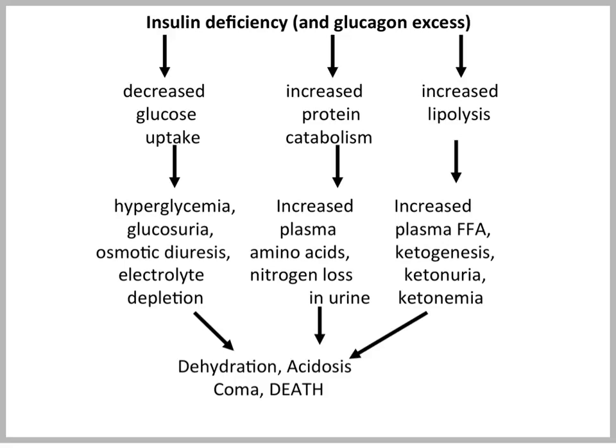Regarding protein catabolism, we have increased plasma amino acids and nitrogen loss in urine. Regarding increased lipolysis, we have increased free fatty acids, increased ketogenesis, ketonuria, and ketonemia — ketones in blood. Because there is also a renal threshold for ketone excretion, when they become too high, we see ketones in urine. If this continues, we see dehydration, acidosis — because ketones are acids — and eventually coma and death if untreated.